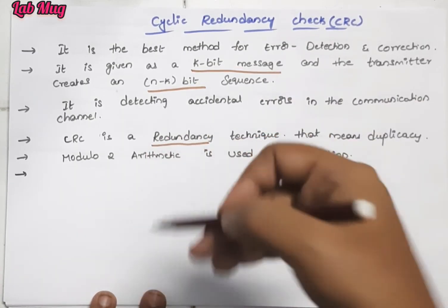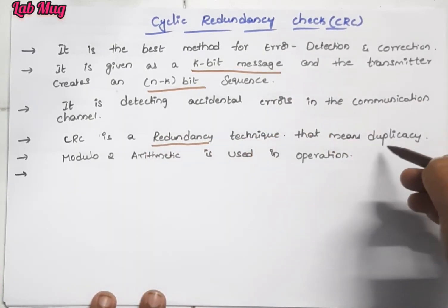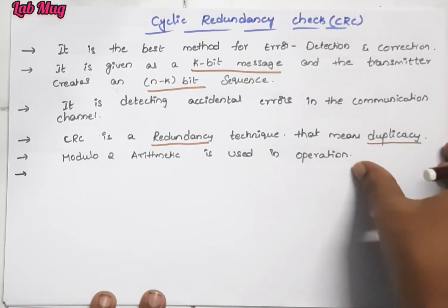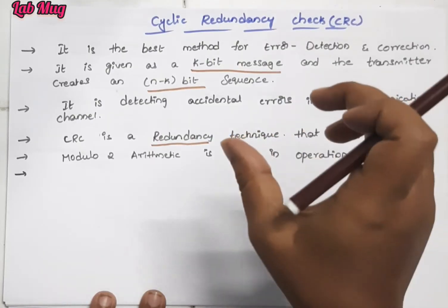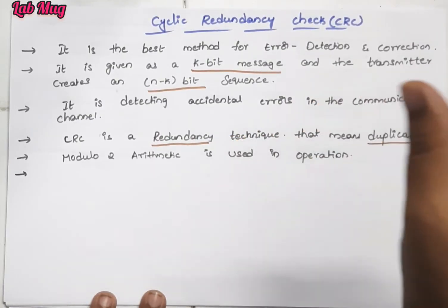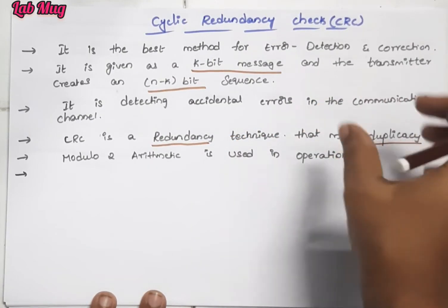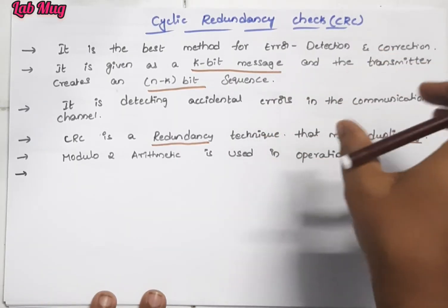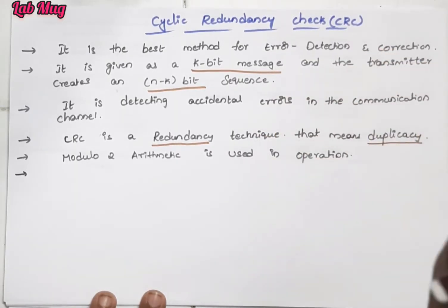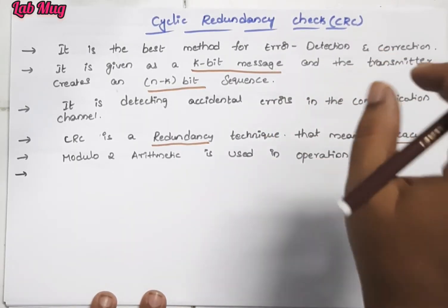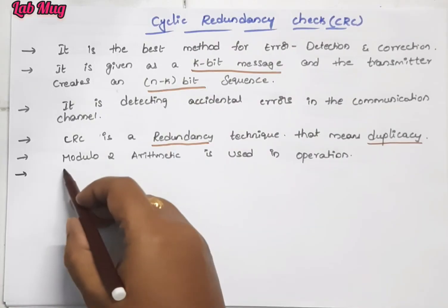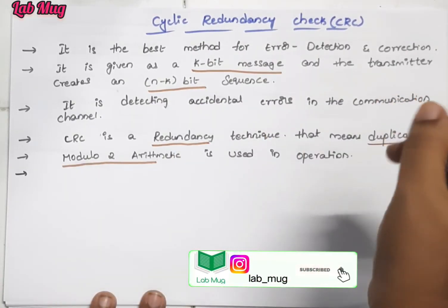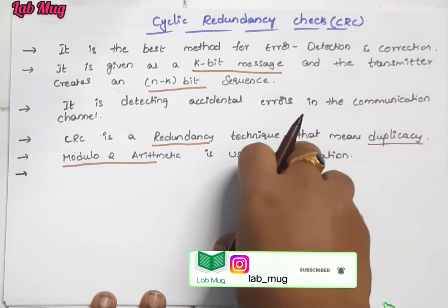What is Redundancy? If we collect duplicate data, that means duplication equals redundancy. By using that technique, we will use the CRC concept. The important thing here is Modular-2 Division, and we will perform operations based on that.